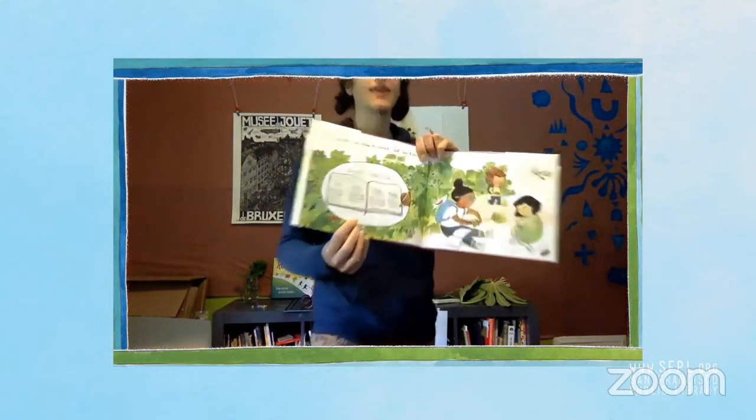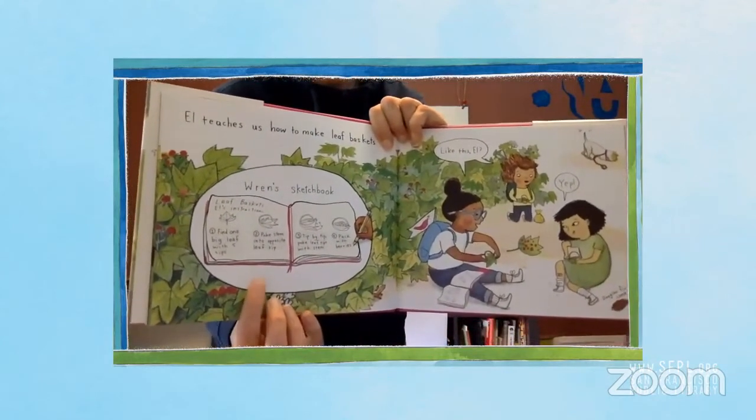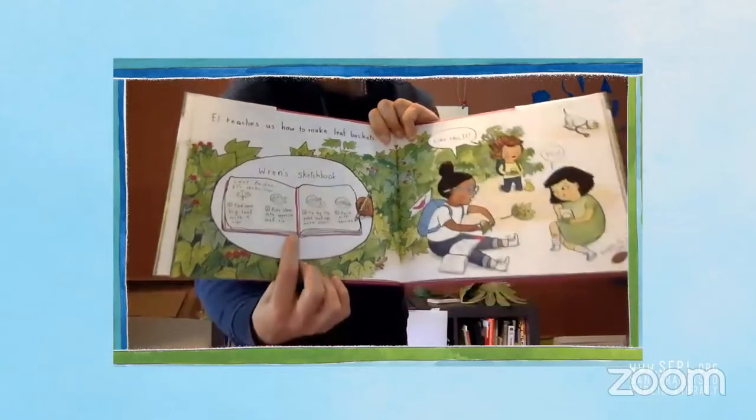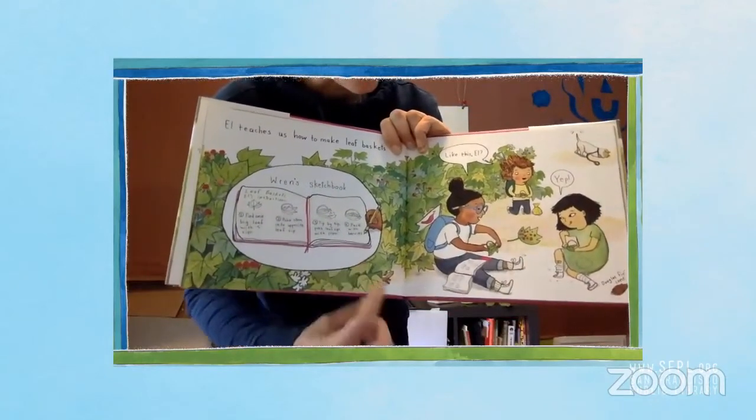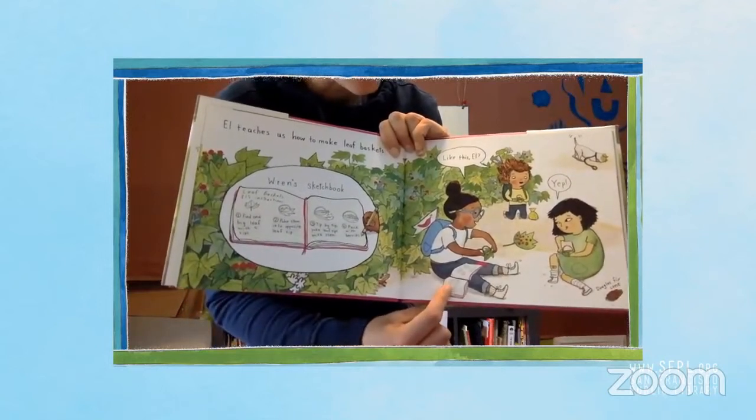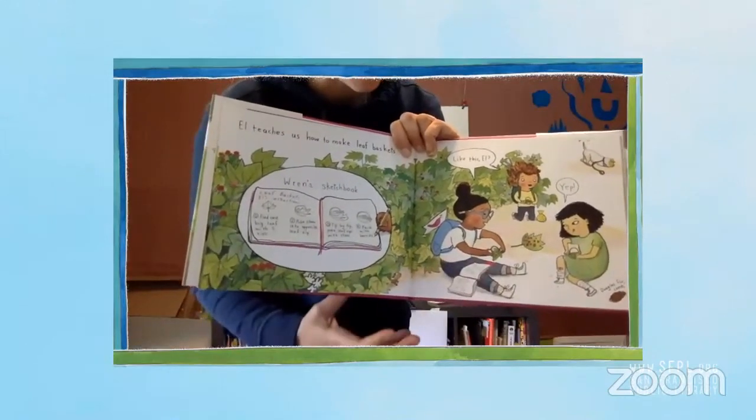She uses the sketchbook to make drawings of some of the things she sees and does in the hike. And you can see little cutouts in the book that show this. Here's Ren's sketchbook and she's drawing instructions for how to make leaf baskets here. And if you look closely over here, you can see Ren with her sketchbook in her lap as she's making a leaf basket.